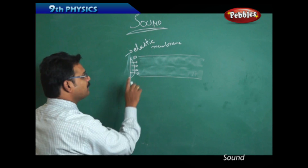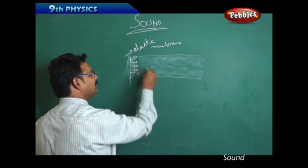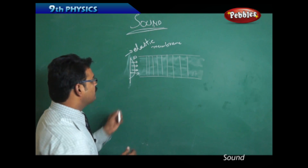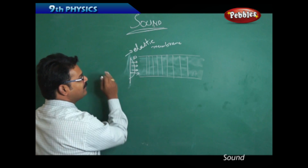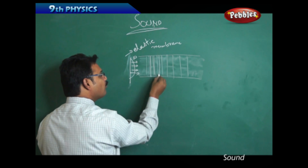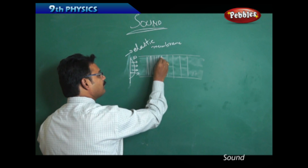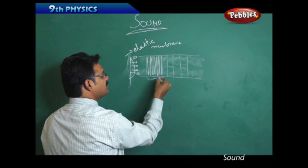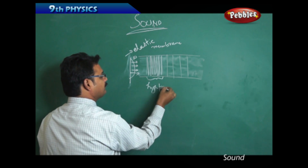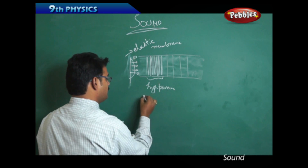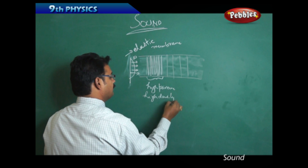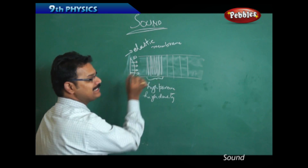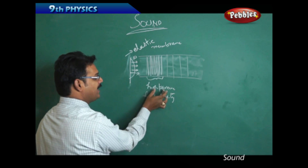When the membrane expands, it applies pressure to the gas. The gas has layers — imagine one-dimensional gas layers. When the membrane applies pressure, the gas layers come closer to each other. When they come closer, that region has high pressure and high density, because density is mass per unit volume, and within a small volume there are now many gas layers.